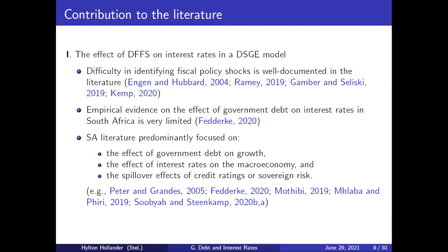With regards to the contribution — as Nicola mentioned, this is receiving a lot more attention in the literature. The empirical evidence that exists in South Africa on the effect of government debt on interest rates is quite limited. Fedeker is a recent study. He looks at the South African–US spread and estimates that of the recent rise of 700 basis points of the spread between US and South African long-term interest rates on government debt, about half of that is attributable to South Africa's debt accumulation. Much of the other literature focuses on the role of debt on growth or interest rates in the macroeconomy, and some SAR papers have been looking at the effects of credit ratings.